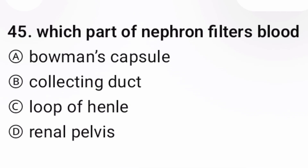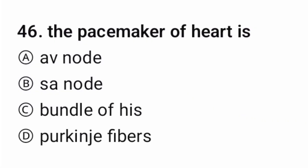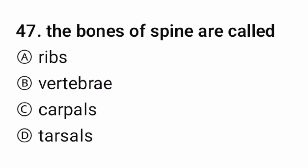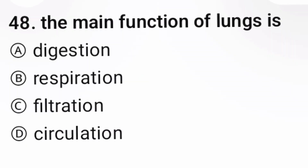Question 45: The tissue that connects bone to bone — blood. The correct option is A. Question 46: The pacemaker of the heart is — the correct option is B, sinoatrial node. Question 47: The bones of the spine are called — option B is correct.